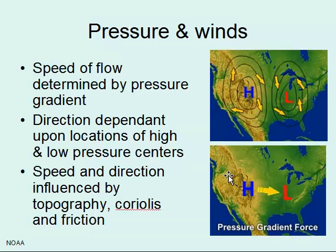If you think about speed, location, and direction, it all depends on where those high and low pressure centers are. The speed of the air flow is determined by how different the pressure is — this is called the pressure gradient. A small difference in pressure means slower winds; a high difference in pressure means faster winds.